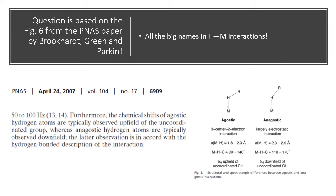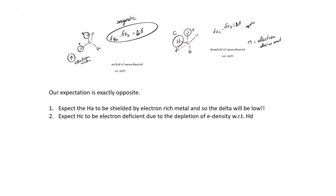An upfield shift means that there is a greater degree of electron density around the hydrogen which is coordinated. The opposite is said of anagostic interactions. Agostic interactions are defined as those hydrogens which are interacting with electron-deficient metal centers, and so some electron density flows from the C–H bond — the sigma bond of the C–H — into the empty metal orbital of the metal atom, resulting in depletion of electron density around the C–H bond.